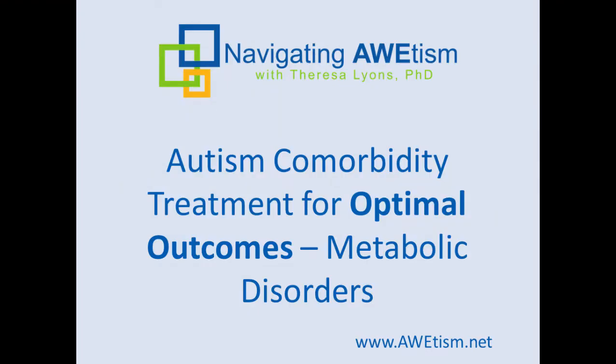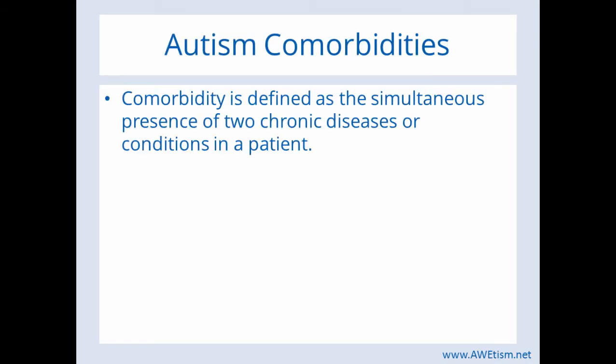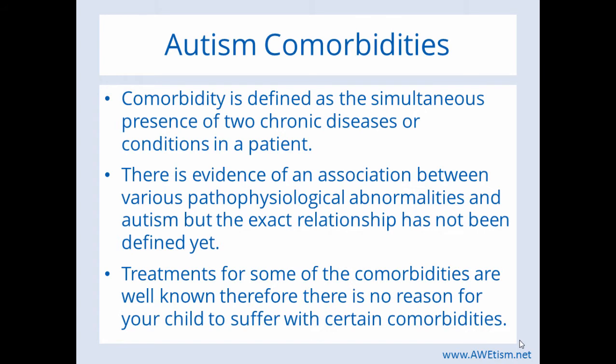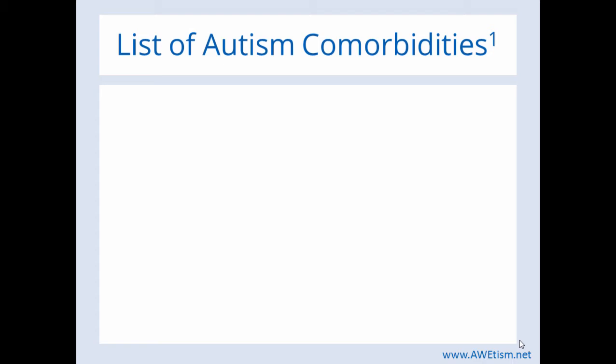Let's get to the science. Comorbidities are extremely important to treat if you're going for an optimal outcome. Let me teach you about autism comorbidities. Comorbidity is defined as the simultaneous presence of two chronic diseases or conditions in a patient. There's evidence of an association between various pathophysiological abnormalities and autism, but the exact relationship has not been defined yet. But that does not mean there's nothing to do. Treatments for some of these comorbidities are very well known, therefore there's no reason for your child to suffer with certain comorbidities.